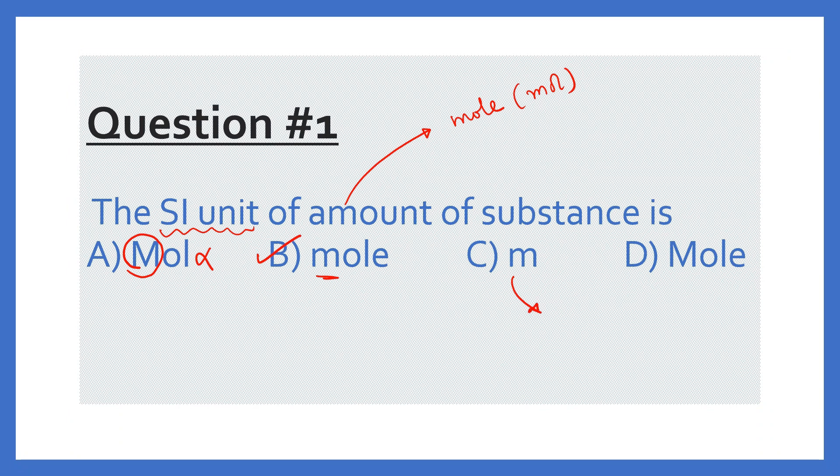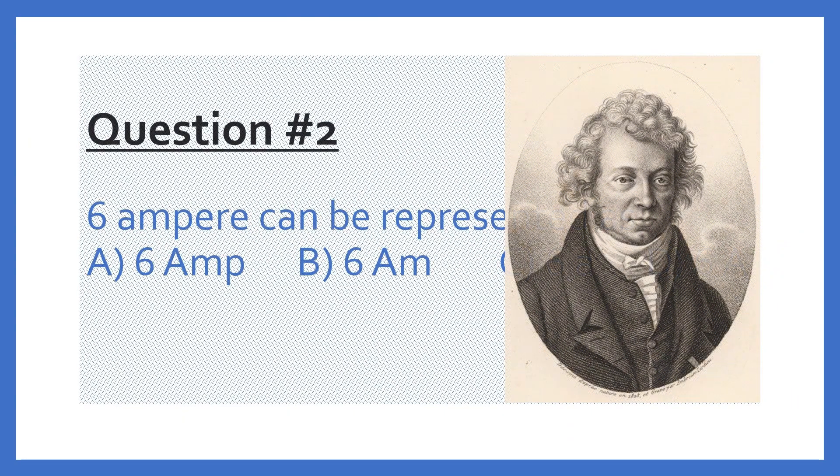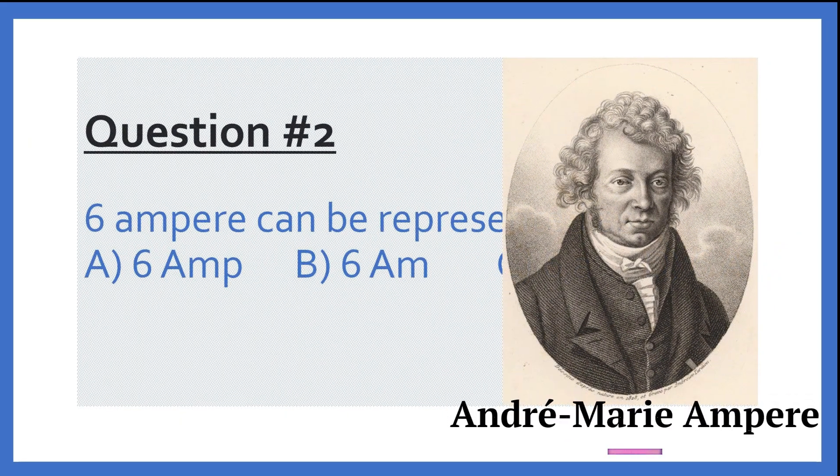C option says what? C option says M. What do you mean by M? M means meter, unit of distance. So this is not correct. Last, MOLE. This is not correct because M is capital over there. M should always be small. So the correct answer is mole. So let's go to the next question.